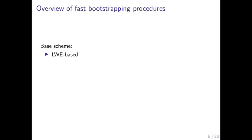How do these fast bootstrapping procedures work? In general, bootstrapping is the evaluation of the decryption function homomorphically, so that at the end we generate a new ciphertext encrypting the same message but with smaller noise. We have this base scheme, which is the scheme that we want to bootstrap.